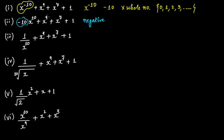Here it is 9 — it's a whole number. It's 7 — it's a whole number. Here this is 1, which is basically x raised to the power of 0, and 0 is also a whole number. So yes, this is a polynomial.